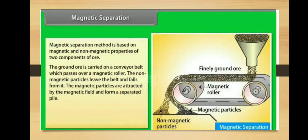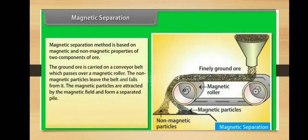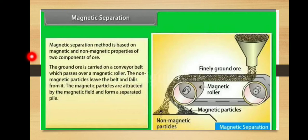What is magnetic separation? The magnetic separation method is based on the magnetic and non-magnetic properties of the two components of ore. The ground ore is carried on a conveyor belt which passes over a magnetic roller. The non-magnetic particles leave the belt and fall from it, while the magnetic particles are attracted by the magnetic field and form a separated pile.